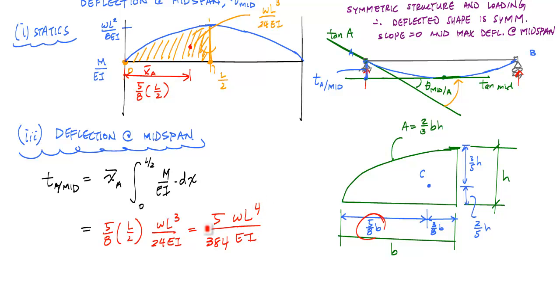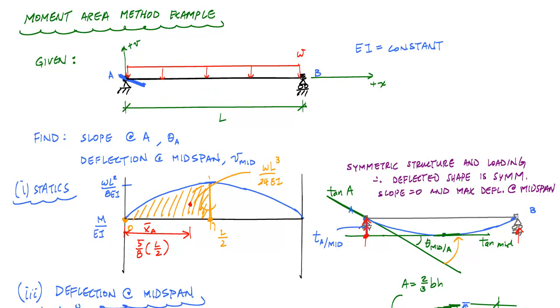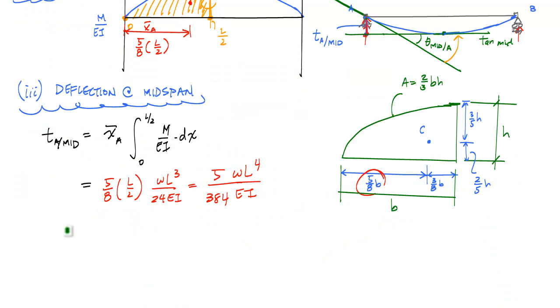And notice, we get a positive result, which means that point A is above the tangent line at midspan. So we have to go from here, the tangent line at midspan, we have to go upwards to get to point A. And then we get the positive result. But according to our coordinate system for the beam, this V and the X that we established, a deflection or a point on the beam that's below the X axis is considered negative. And so in this case, the deflection at midspan is equal to minus 5 over 384 WL to the fourth over EI.